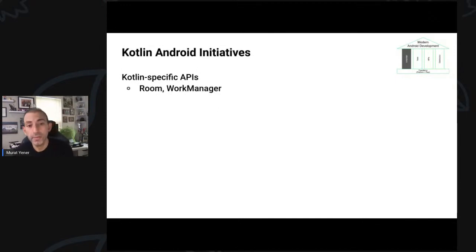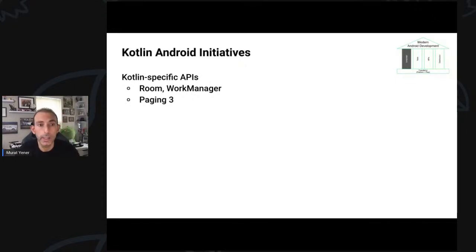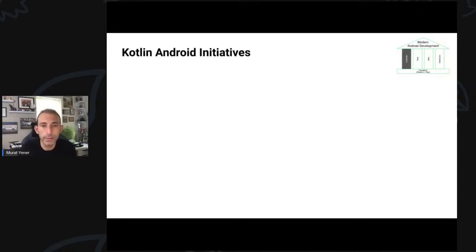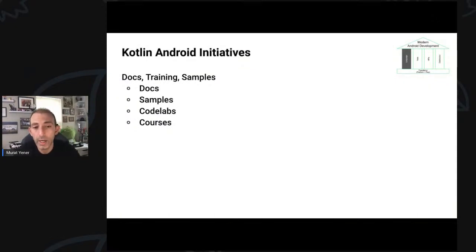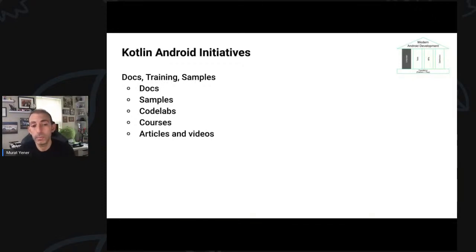Other Kotlin-specific APIs: Room and WorkManager use coroutine APIs to make asynchronous use cases much simpler. Also, Paging 3 is completely rewritten with Kotlin including coroutines. Jetpack Compose — probably you've heard of it — is a new UI toolkit for Android and it's completely written in Kotlin. Next, we have docs, training, and samples. If you want to jump on the modern Android train, we have docs, samples, lots of code labs, courses, a separate 'Android Basics with Kotlin' course, lots of articles and videos — for example, the Kotlin Vocabulary series.